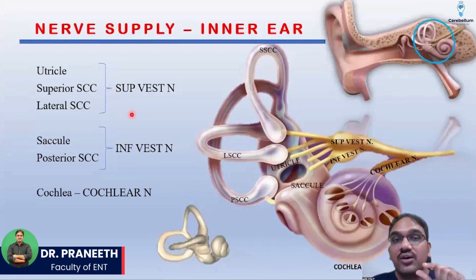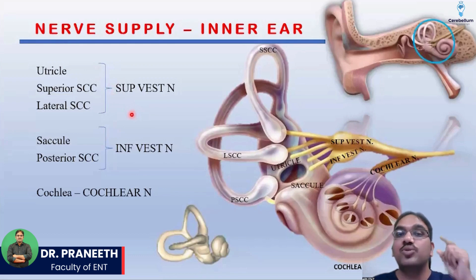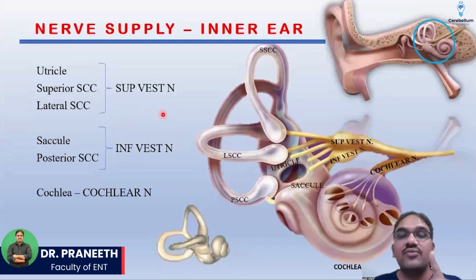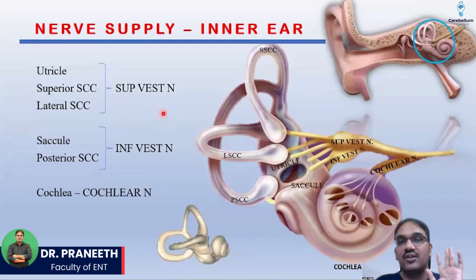Your vestibular nerve is actually a combination of two vestibular nerves: the superior vestibular nerve and the inferior vestibular nerve. So which vestibular nerve is supplying which structure? That can be a source of confusion.